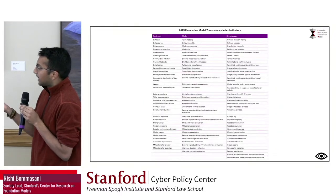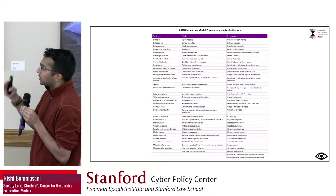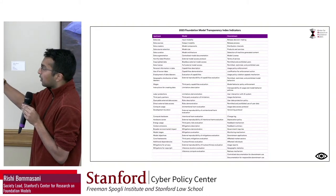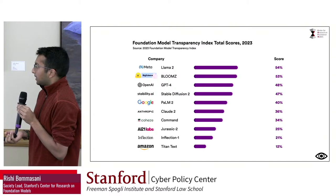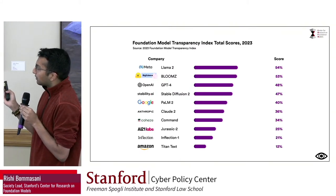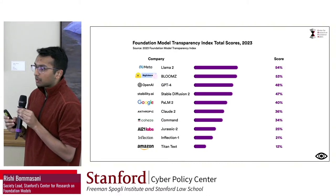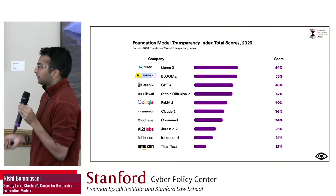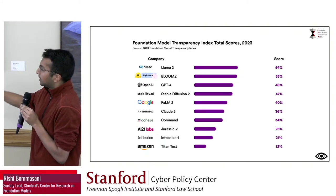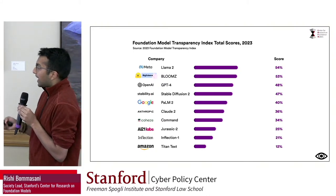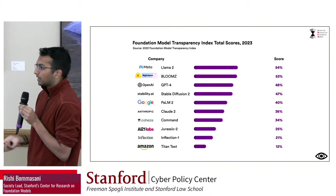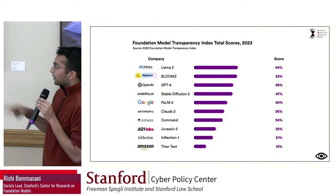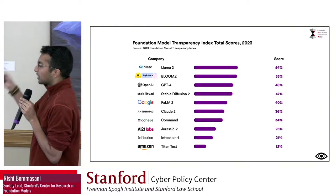Once we define these 100 indicators, we assess 10 major foundation model developers as of October 2023 against them — do they disclose the information relevant for each? What we find is that companies do disclose some of this information, but also don't disclose much of it. The most transparent companies are only disclosing about half of these 100 indicators. There's a big disparity — for example, almost 40 points between Meta and Amazon. More importantly, we look at where there is systemic opacity across the space versus more idiosyncratic opacity. For the first version of the index, we went for simplicity with a binary disclosure measure.